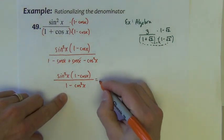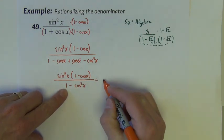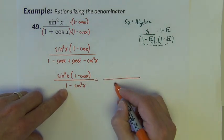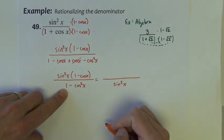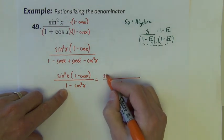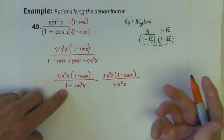Now, 1 minus cosine squared is a Pythagorean equivalent of sine squared.